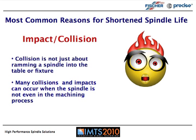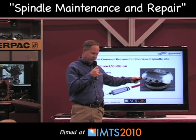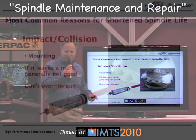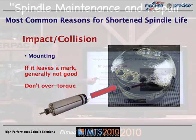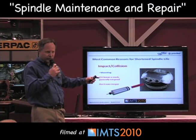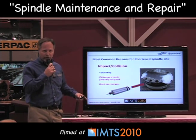The spindle can essentially experience an impact or a crash even when we're not in the machining process. For instance, these are real-world examples. When mounting the spindle, if you want to fine-tune the position of the spindle on the mount, it's not usually good to go to extremes. We have to be careful about how the spindle is being mounted, taking into account not only direct impact but also the condition of the bearings inside the spindle.